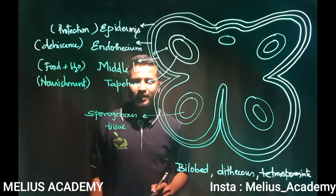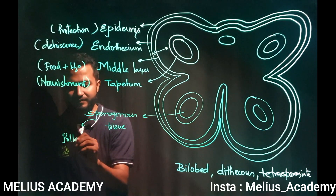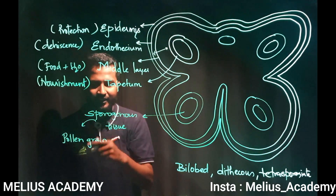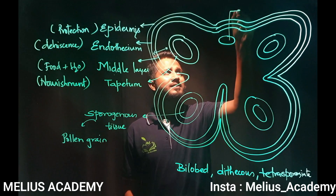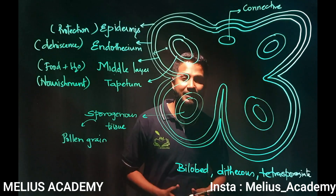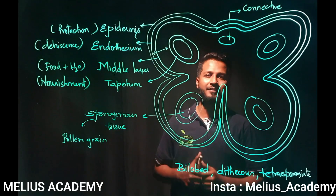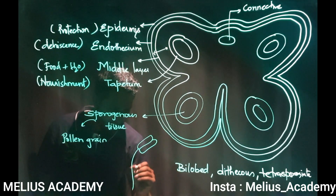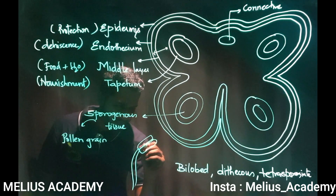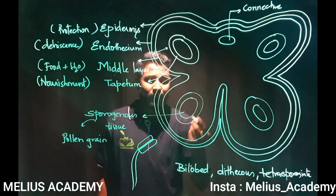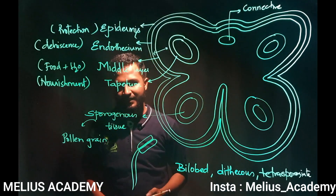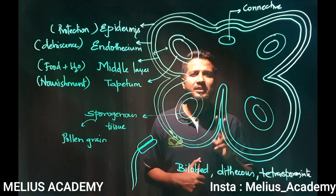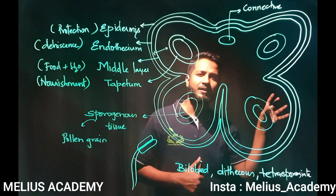Then comes the sporoginous tissue, which actually helps in the formation of pollen grains. In examination, write the side heading and then the explanation — this is how you get full marks. There is one more tissue: the bindi shown here is known as connective. As the name suggests, it connects the two lobes of the anther to the filament. The structure connecting the filament and anther is the connective. This is the most important diagram — if I had to rank diagrams worth five marks, TS of anther is number one, and anatropous ovule is number two.